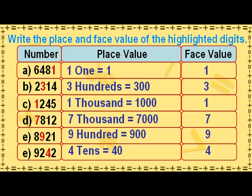Write the place and face value of the highlighted digits. The place value of 1 in the ones place is 1, and the face value of 1 in the ones place is 1. The place value of 3 in the hundreds place is 300, and the face value of 3 in the hundreds place is 3.